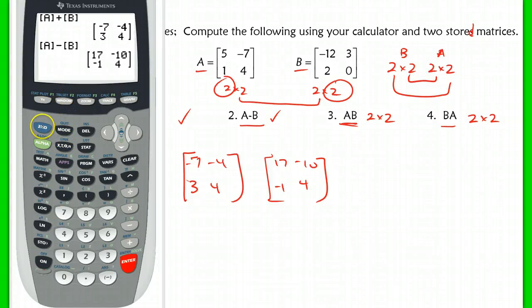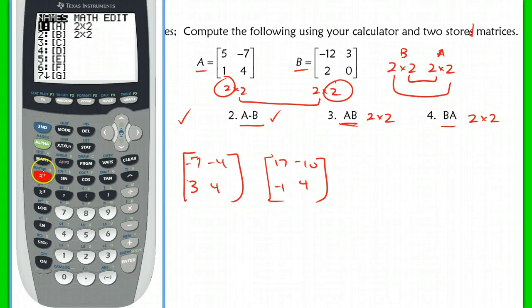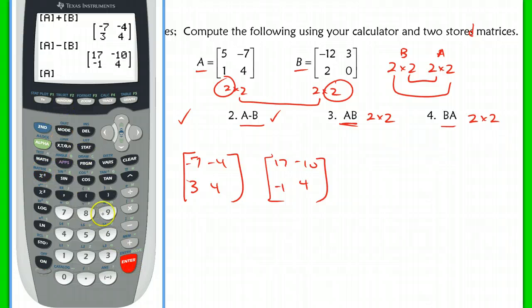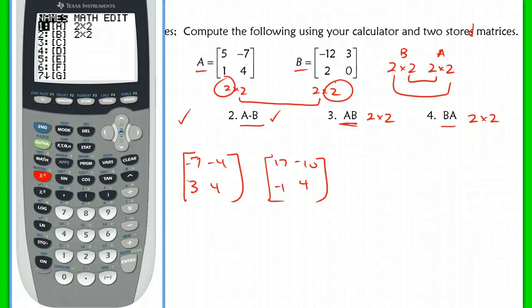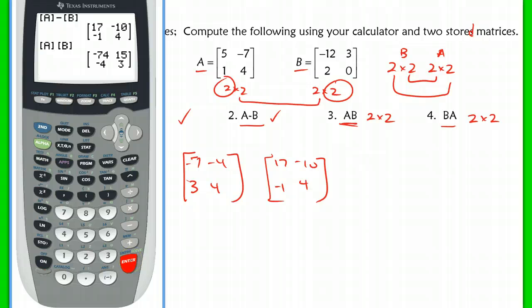All right. A times B. We're going to hit second matrix. And A times, you can use the multiplication key, or you could actually just do second matrix A times second matrix B here. And there's the product. Okay?